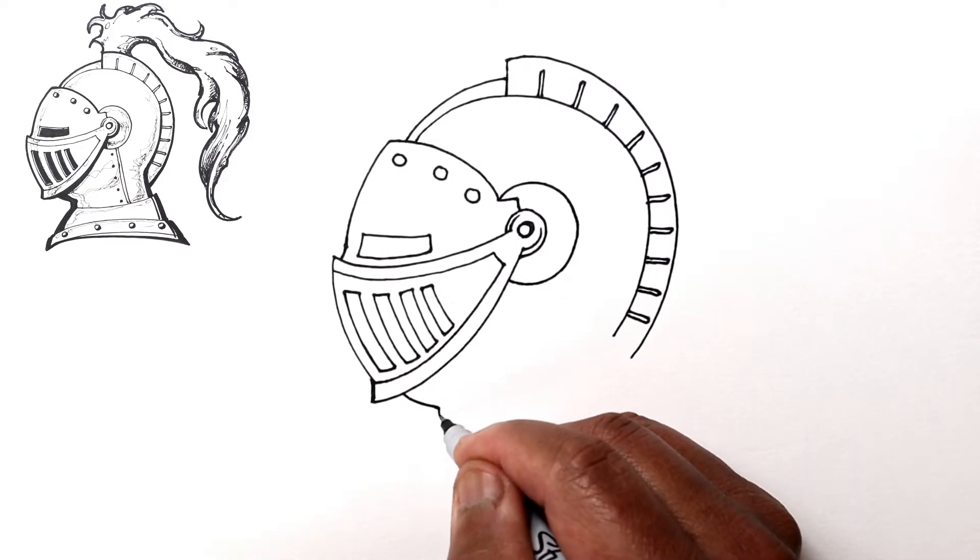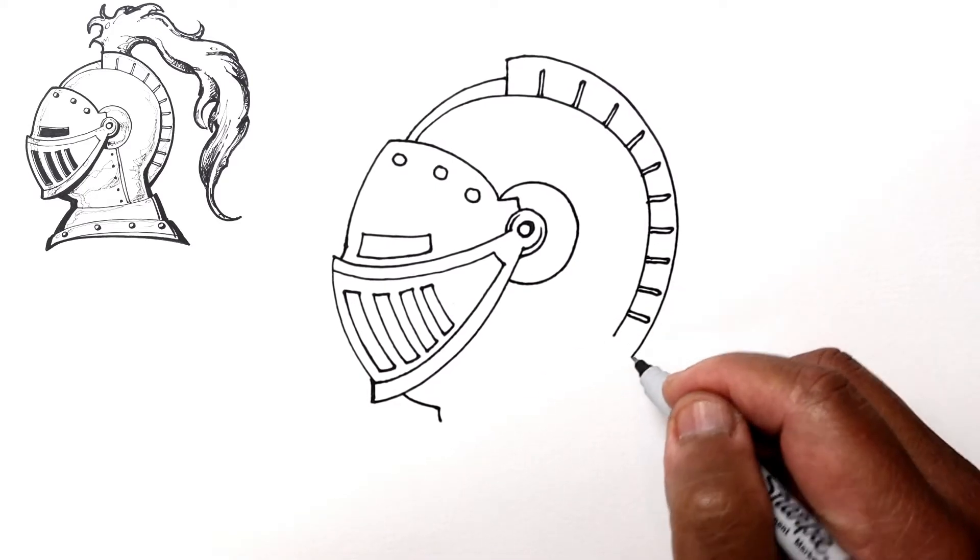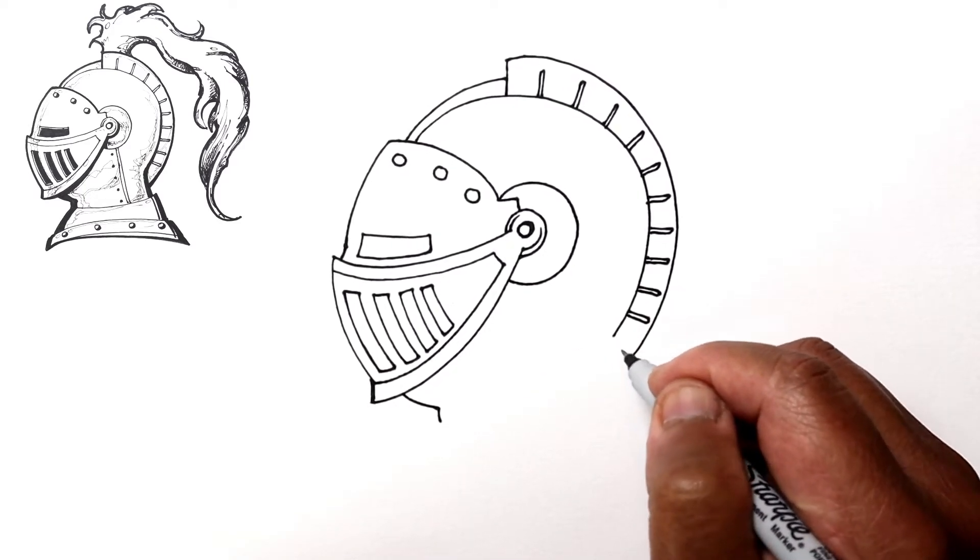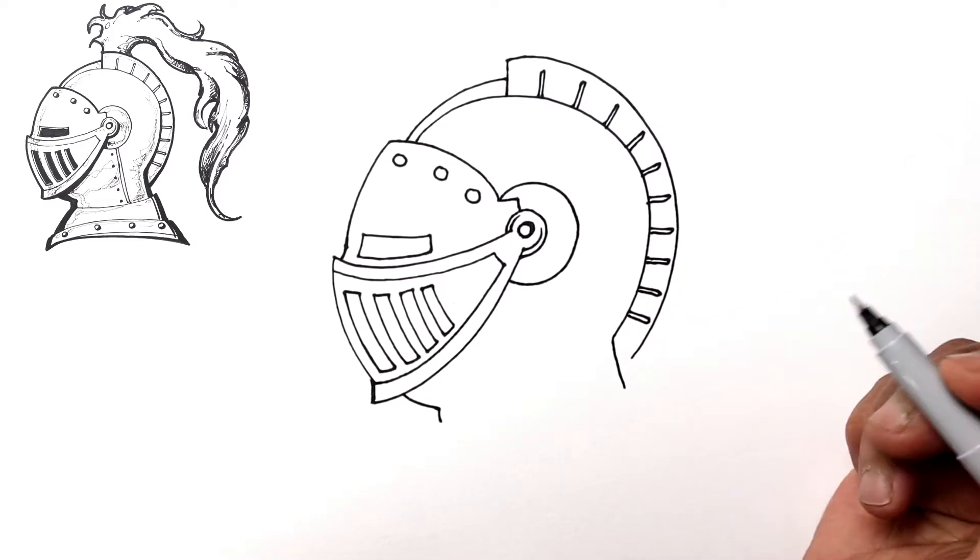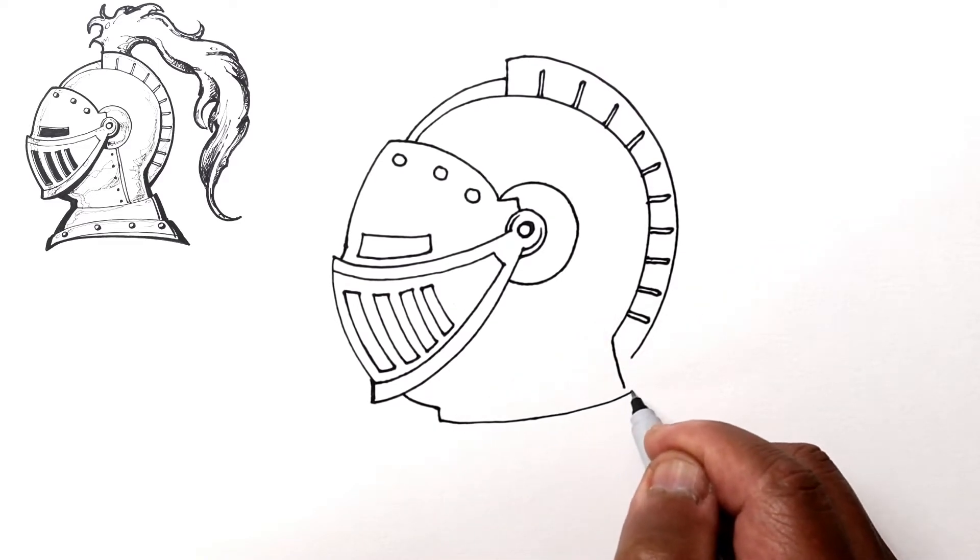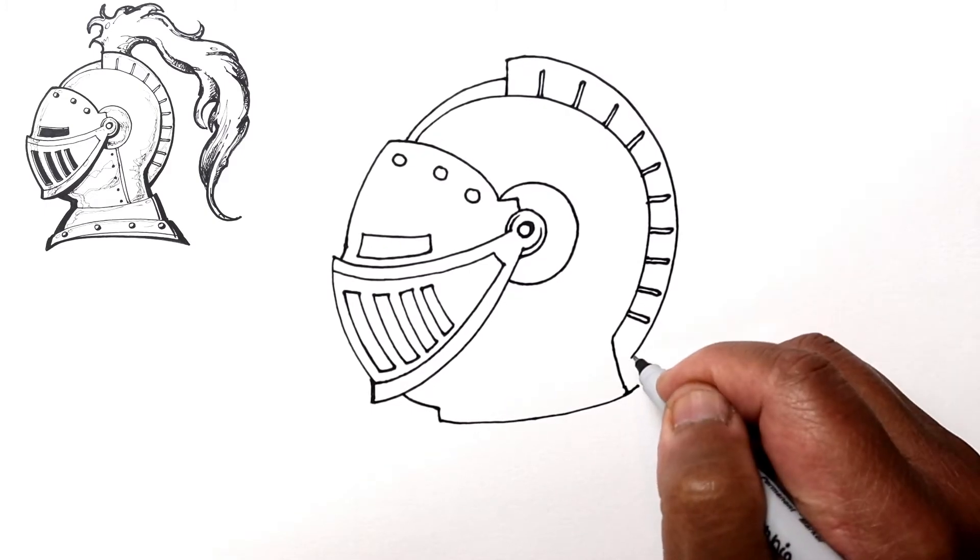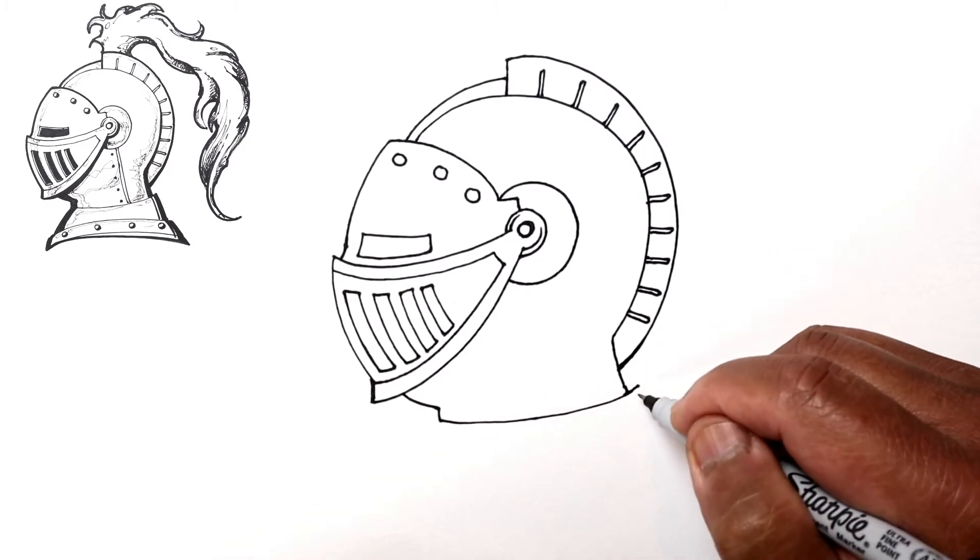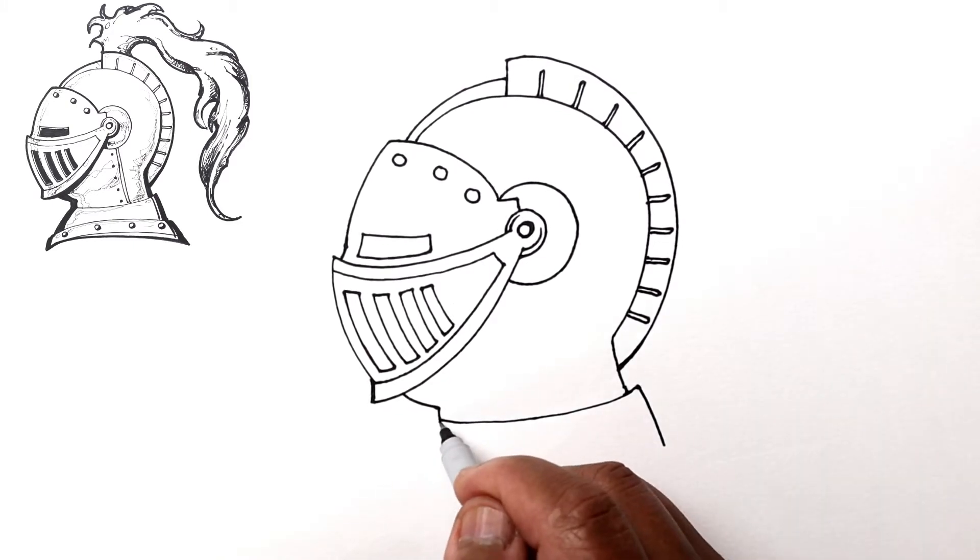From here we'll have the neck going down this way. Let's just curve it downward and then kind of give him a little bit of a collar like so. Let's just continue that line right there, so now we've got the neck section going down and here we've got the part that's going down to the chest.